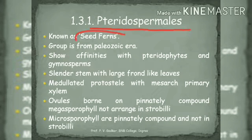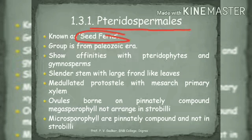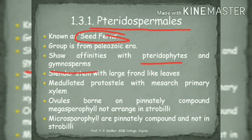Pteridosperms are the first fossil gymnosperms, known as seed ferns because they have characteristics of both pteridophytes and gymnosperms — pteridophytic reproduction and gymnospermic anatomy. Some paleobotanists consider them as pro gymnosperms. They are popularly known as seed ferns because they possess fern-like fronds. This group is from the paleozoic era.